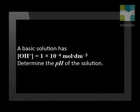Let's look at a different example. A basic solution has the concentration of the hydroxyl ion equal to 1 times 10 to the exponent negative 4 mole per cubic decimetre. Determine the pH of the solution.